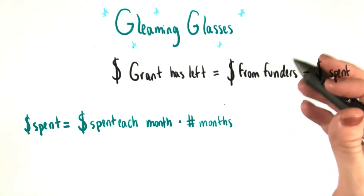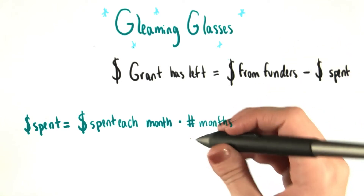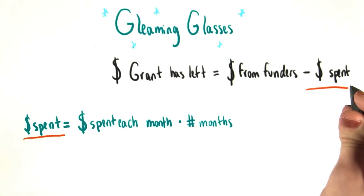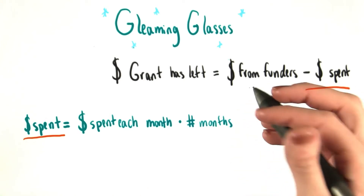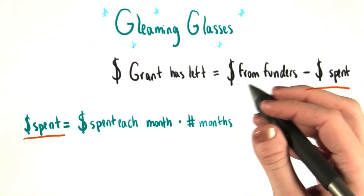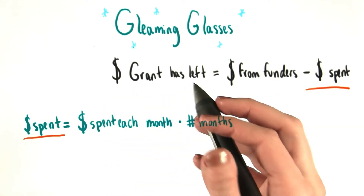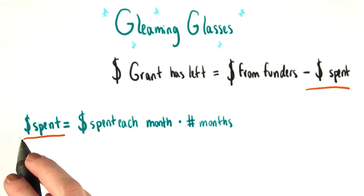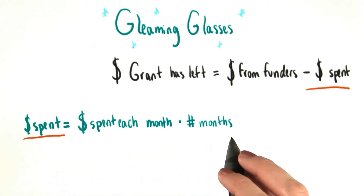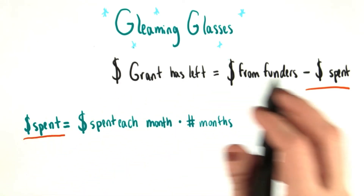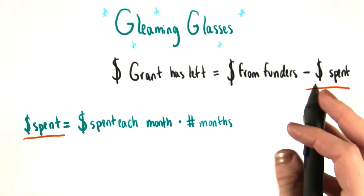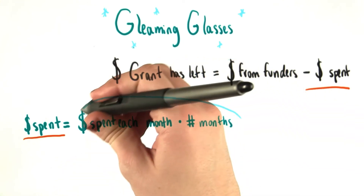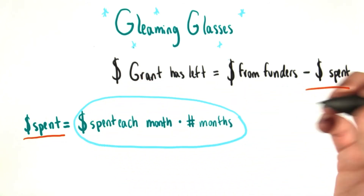One thing that we can notice about these two equations is that money spent is involved in both of them. Remember that what an equation means is that whatever appears on one side of it is exactly equal to what appears on the other side. So, since we know something about what money spent is equal to, anywhere we see money spent in any equation in the system, we can replace it with what we know it's equal to — the amount of money spent each month times the number of months.